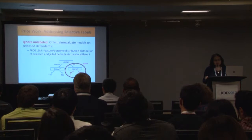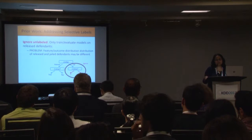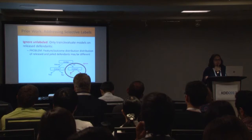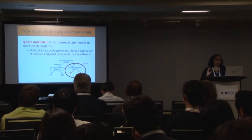Looking at what prior work has done: the first approach is to ignore unlabeled instances and train models using only released defendants where we have labels. The problem is that the feature distribution of jailed and released defendants often differs, so you end up with evaluation biases if you completely ignore the unlabeled instances.